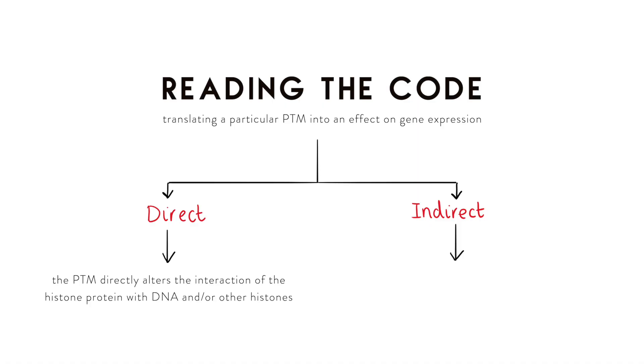The indirect method of reading the histone code involves separate reader proteins that bind to a particular histone modification with favorable binding energy, enabling that modification to have an effect on gene expression. These reader proteins act as intermediaries — they recognize a modification and translate it into a change in gene expression. Compared to direct reading, indirect reading is more common and arguably more biologically interesting, giving greater sophistication and complexity. The key takeaway is writing, erasing, and reading — with reading occurring directly or indirectly.